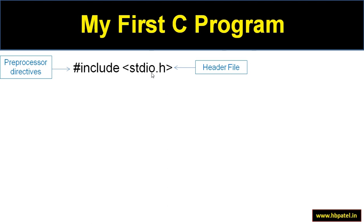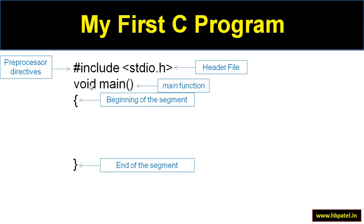Standard input refers to the keyboard and standard output refers to the monitor. This file contains functions related to both. We need to include it because in our program we'll be reading from the keyboard and printing to the monitor, so we need to use library functions already available in this file. The next step is 'void main'. 'main' is a function that gets called whenever the program is run — the two braces are the body of main, and you can have any number of statements inside.